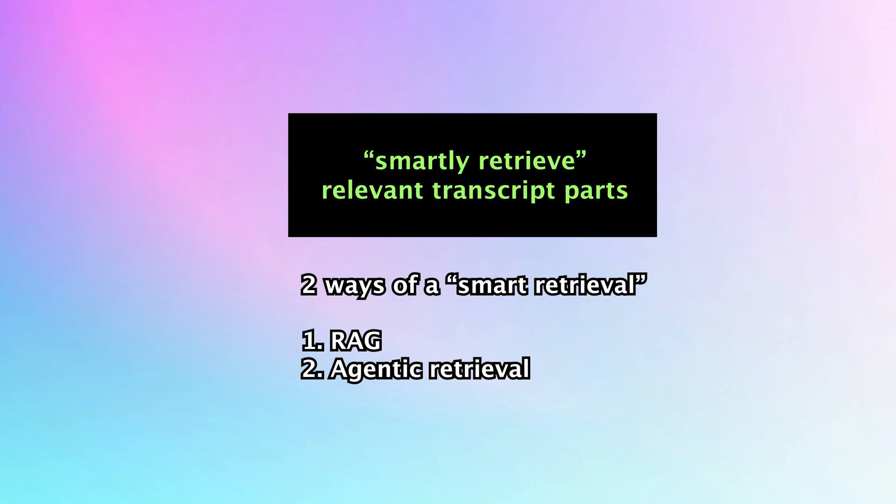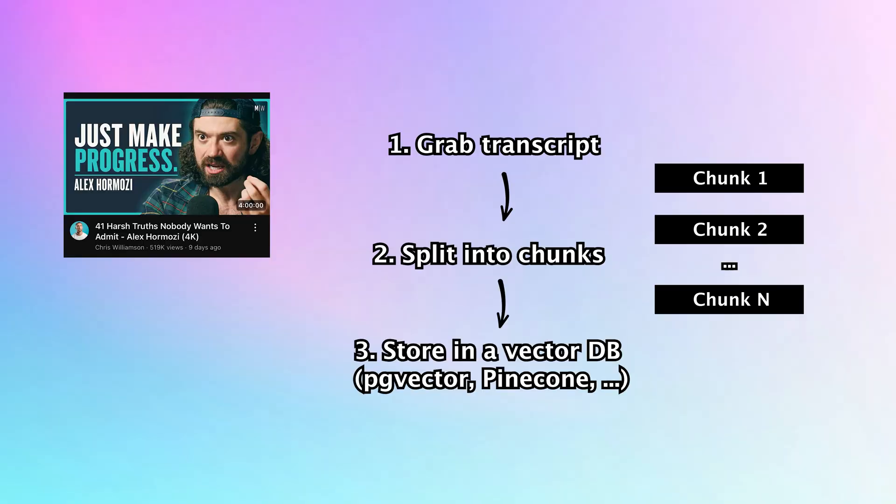They are two different approaches for grabbing the relevant context. Before retrieving, which happens with every prompt, we first need to store the document, which happens only once. We grab the transcript from a podcast, split it into chunks and store it in a vector database as embeddings.